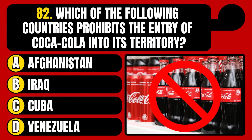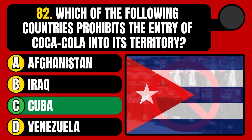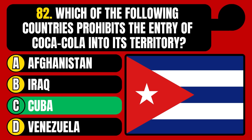Which of the following countries prohibits the entry of Coca-Cola into its territory? Afghanistan, Iraq, Cuba, or Venezuela? The correct answer is option C, Cuba.